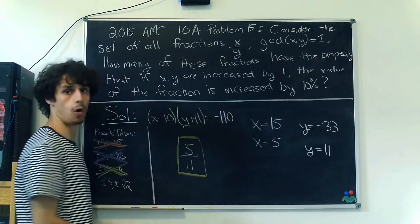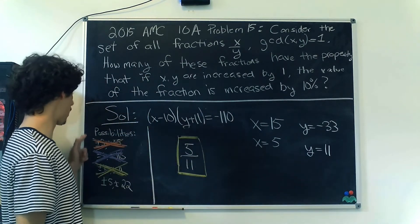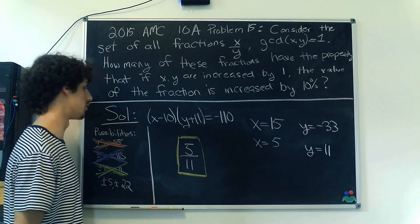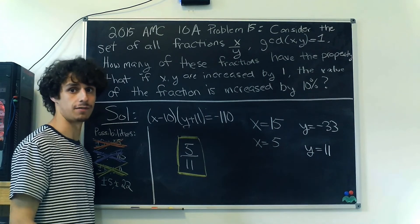This is the only solution to this problem because we've gone through all the other possibilities for factorizations of -110. And that's enough for now.